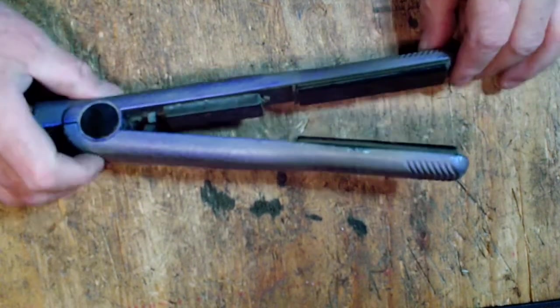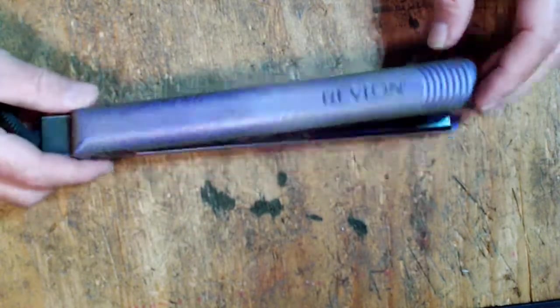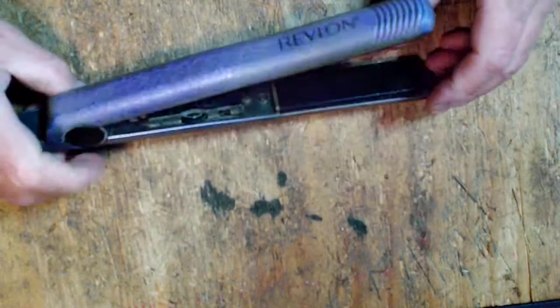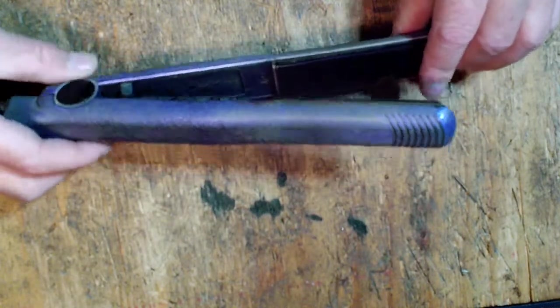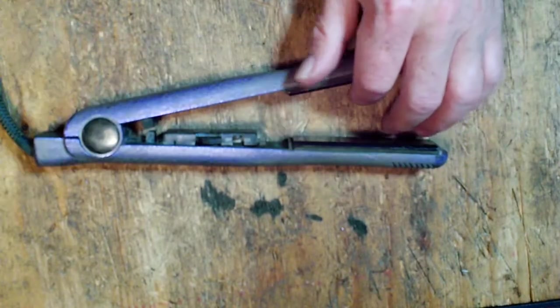Hello YouTube, Copper King Recycling and today on the table I've got this straightener, it's a hair straightener. It's had many years of use and is no longer functioning.